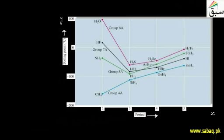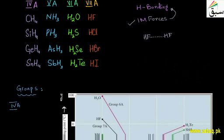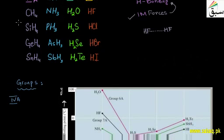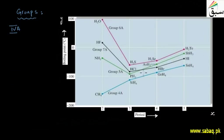First, looking at Group 4A: going down the group, the size of the element increases. As a result, the boiling point is increasing from carbon hydride (CH4) downward through Group 4A.